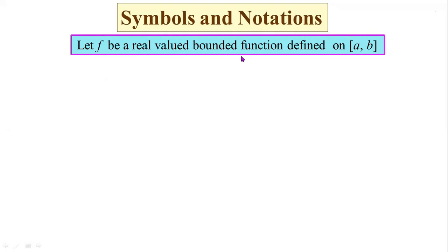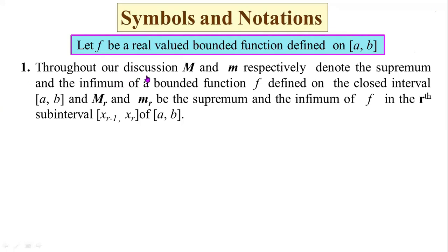Symbols and notations. Let f be a real-valued function defined on the closed interval [a, b]. Capital M and small m respectively denote the supremum and the infimum of a bounded function f defined on [a, b]. Capital M_r and small m_r denote the supremum and the infimum of f in the r-th subinterval, namely the closed interval [x_{r-1}, x_r], of [a, b].